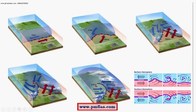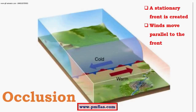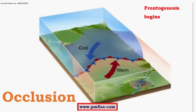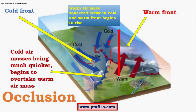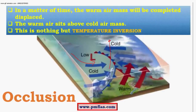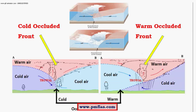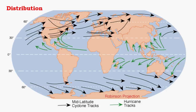To recap — similar to the occluded front explanation — we begin with convergence, then occlusion begins as the cold air mass pushes at a much faster rate. Occlusion is almost complete in the next stage, and once the cold air mass completely pushes through, occlusion is over. This is all about temperate cyclones.